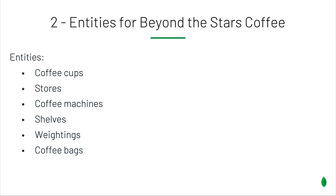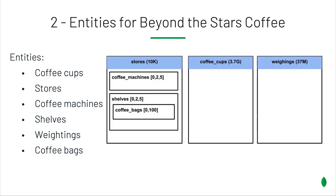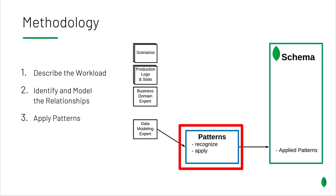Looking at the different entities from our first section — coffee cups, stores, coffee machines, shelves, weighings, and coffee bags — an easy model could keep everything in the store: the store has coffee machines and the shelves on which we have coffee bags. We keep two other collections for coffee cups and weighings. The reason those are separated is because they have a different lifecycle — we said this data expires in one year. Data that expires is usually a good sign that you want a separate collection for those. At this point, this is still pretty relational, so this is where we go and apply our patterns to make things easier to access and faster.